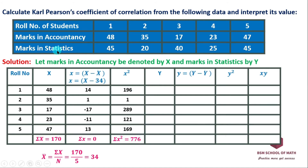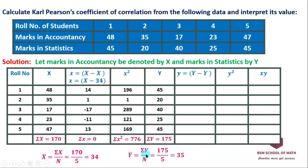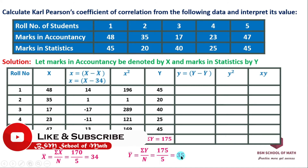Now we look at caps Y, the statistics marks. We compute the summation of Y, which is 175. So y-bar equals 175 divided by 5, which gives 35. This is the actual mean of Y.